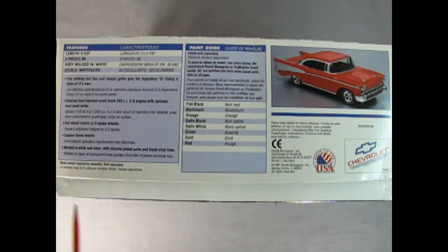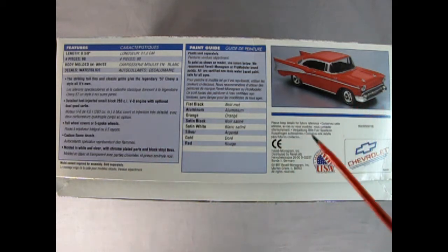On this side of the box we get the length of the model which is 8 and 3/8 inches long. It's got 98 pieces molded in white with waterslide decals. It has the fuel injected motor in it. Unfortunately it's in 1:24 scale and not 1:25, so you can't really swap it between other Chevys.